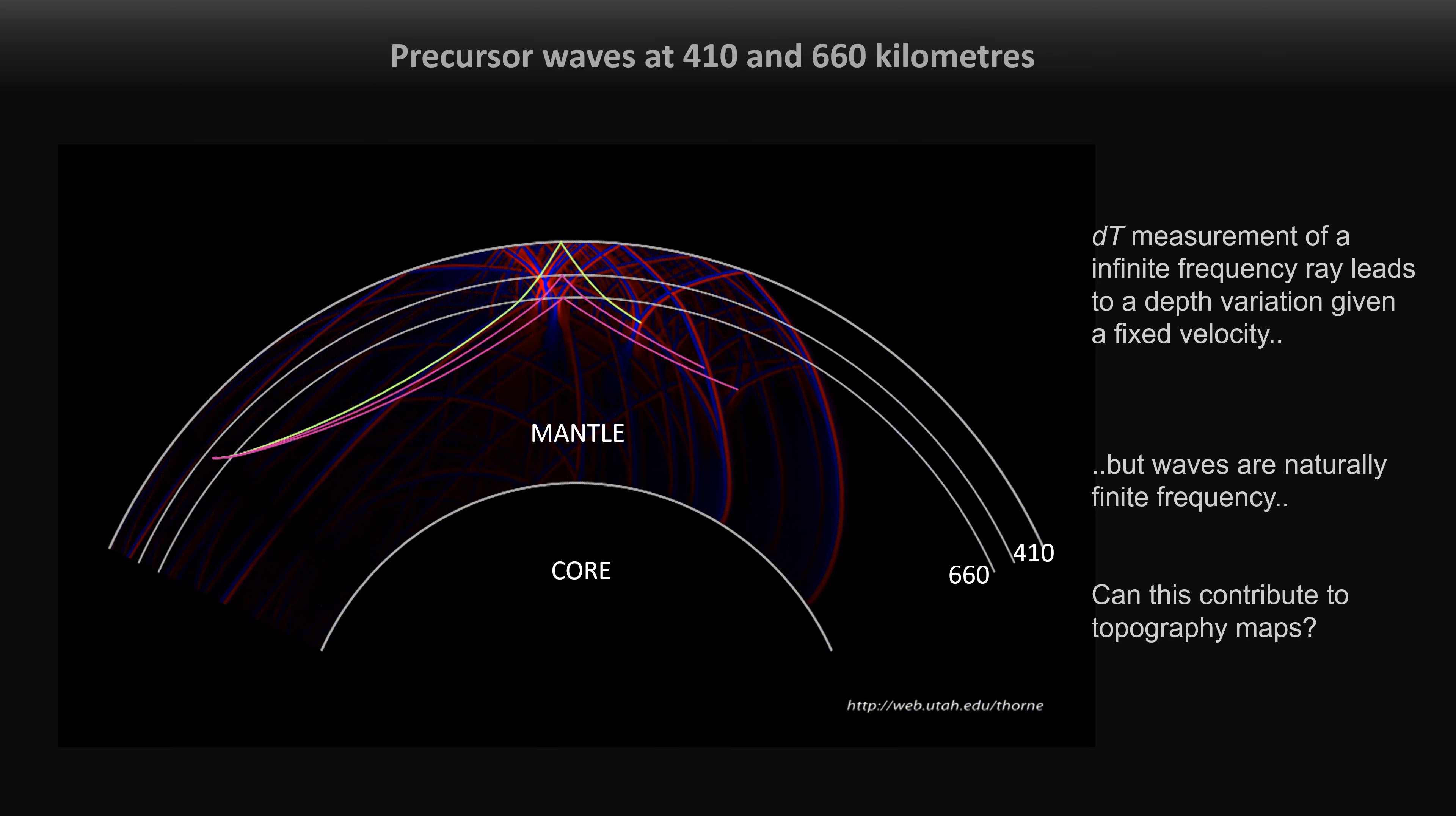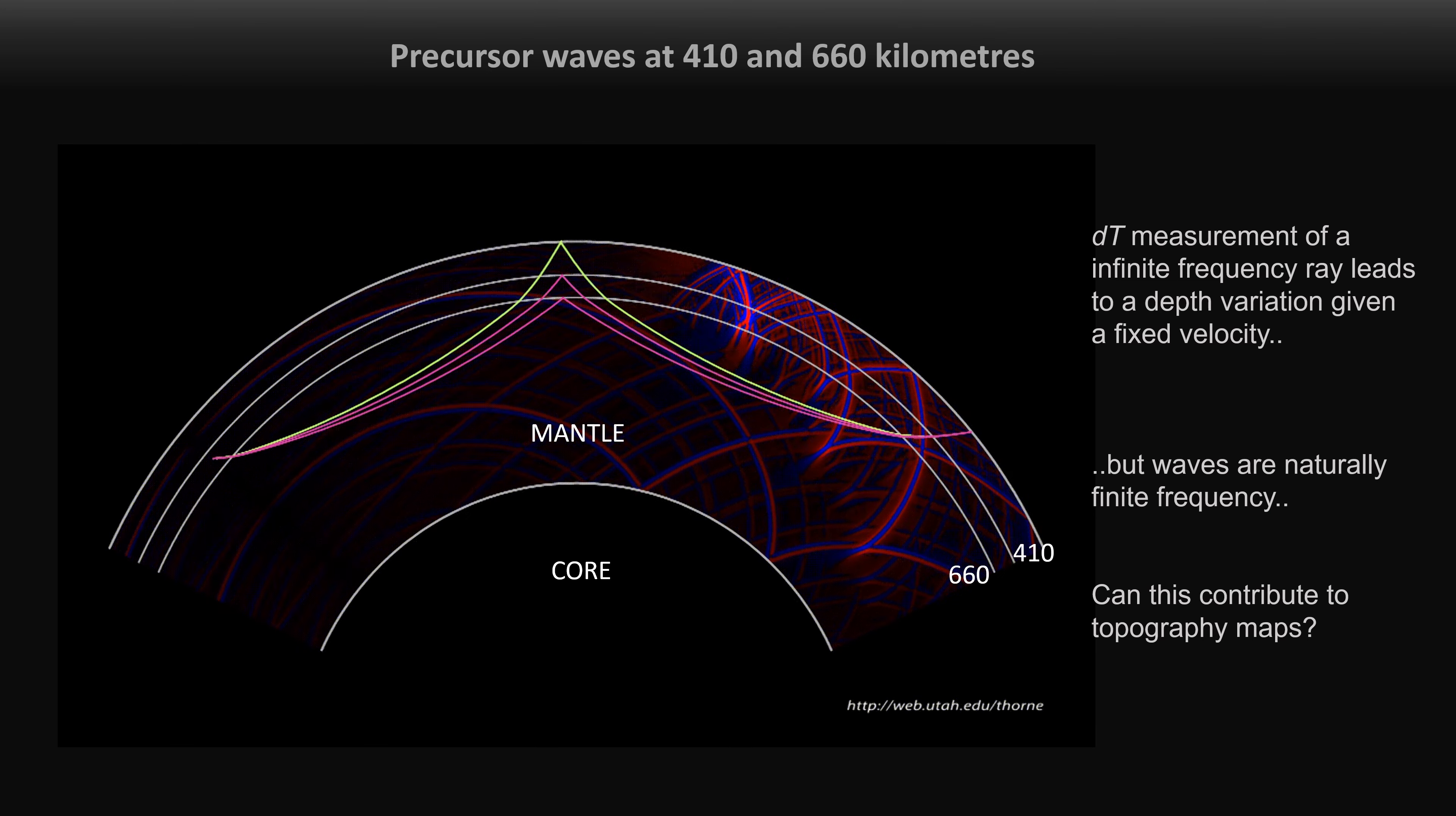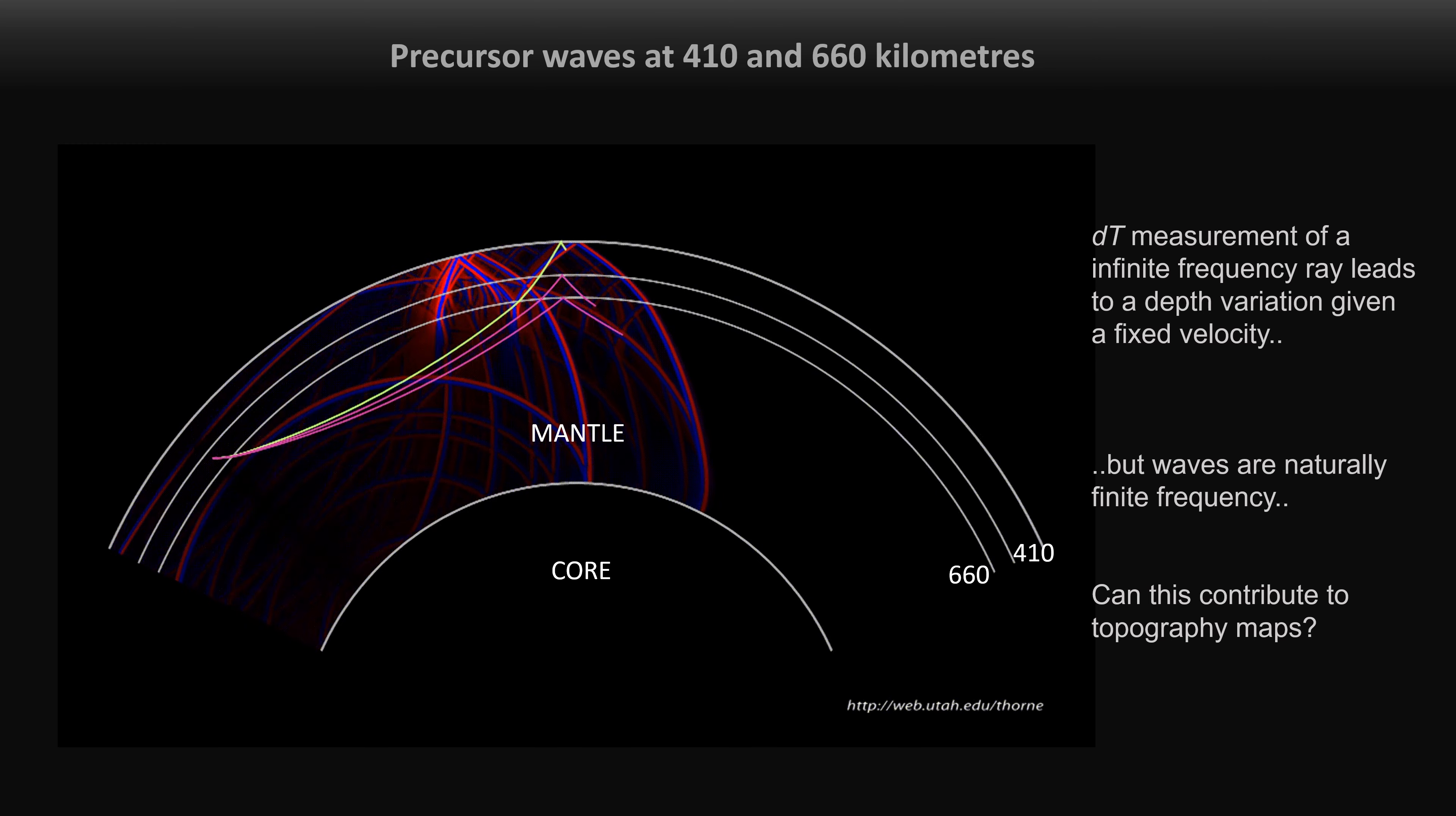Travel times of precursors were usually translated to depth variation using a linear expression, treating waves as rays. Measurement of their time anomaly, given a velocity model, leads to a topographic variation in kilometers.